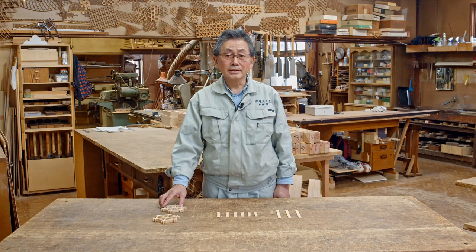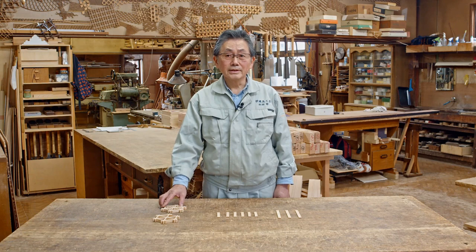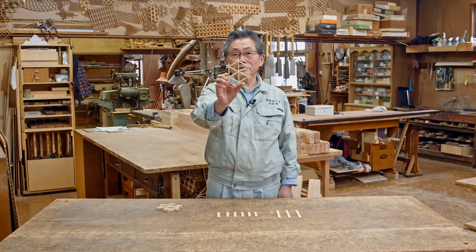I will now make a hemp leaf motif coaster made using three-way wooden joints. First, I will go through the process of assembling the base frame.